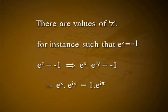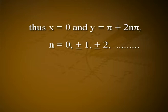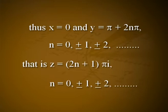Example 1: There are values of z such that eᶻ = −1. From eᶻ = −1, we have eˣ · eⁱʸ = 1 · eⁱᵖ, which implies eˣ = 1 and y = π + 2nπ, where n = 0, ±1, ±2, ... Thus x = 0 and y = π + 2nπ, giving z = (2n+1)πi, where n = 0, ±1, ±2, ...